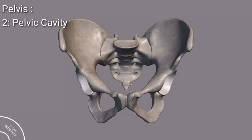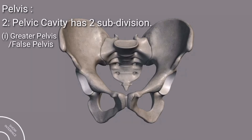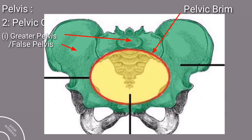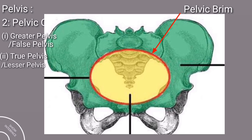We subdivide the pelvic cavity into two. One is the greater or false pelvis, which is above the pelvic brim — as you can see here, the pelvic cavity above the pelvic brim is the false or greater pelvis. The second one is the true pelvis, also called the lesser pelvis, which is the pelvic cavity below the pelvic brim. So the pelvic brim subdivides the pelvic cavity into the true pelvis and the false pelvis.